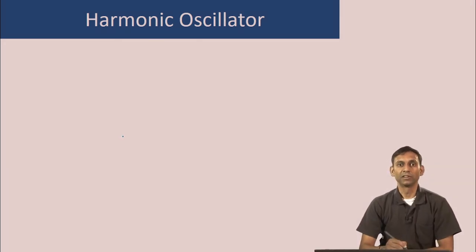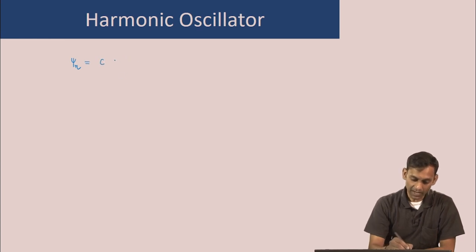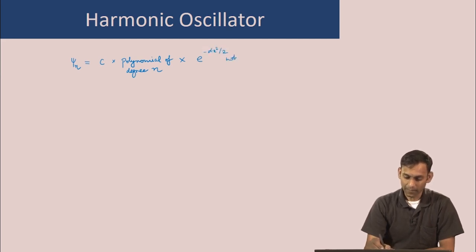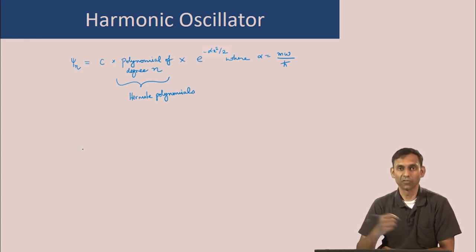The eigenfunctions of the harmonic oscillator Hamiltonian have the general functional form: the nth eigenfunction is some constant times a Hermite polynomial of degree n, multiplied by the Gaussian function e to the power of minus alpha x squared over 2, where alpha equals m omega over h-bar. We have looked at the functional forms of several of these Hermite polynomials.